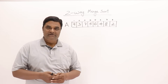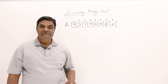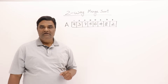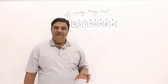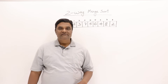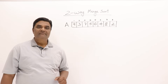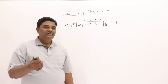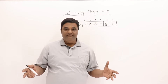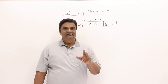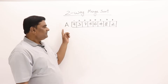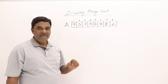Now let's look at two-way merge sort. There are two methods: two-way merge sort and merge sort, and people often confuse them. The key difference is that two-way merge sort is an iterative process using loops, whereas merge sort is a recursive algorithm. For two-way merge sort, we apply two-way merging — merging two lists at a time — to sort an array.